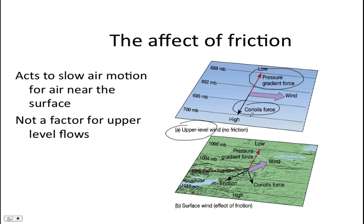The lower part of the diagram shows surface wind. The frictional force not only slows the wind, but it also changes the direction the wind will travel. So here is the frictional force, and because of the friction, the wind is traveling in this direction.